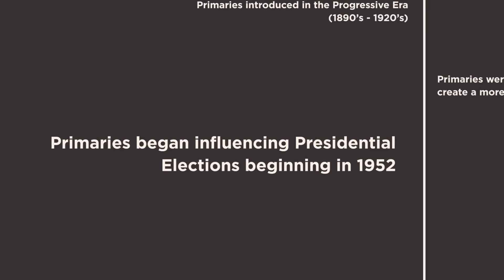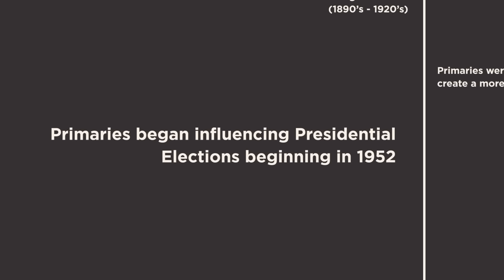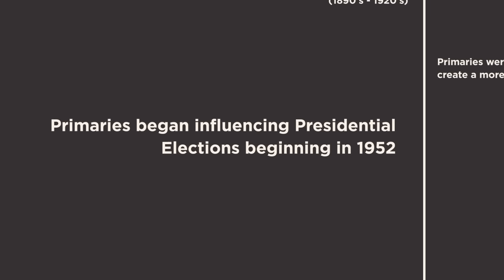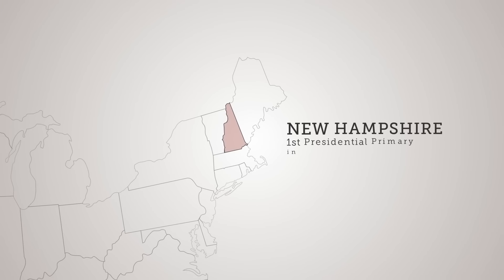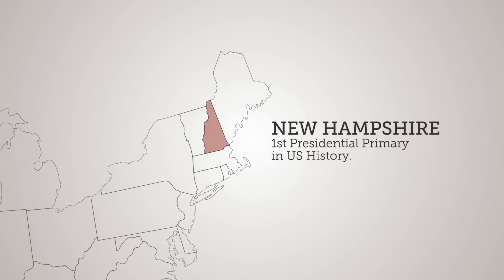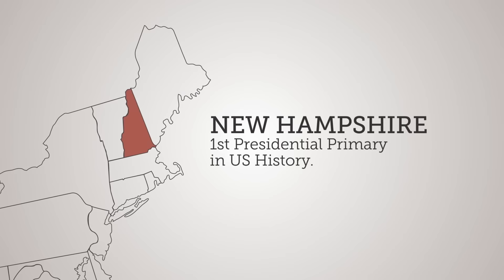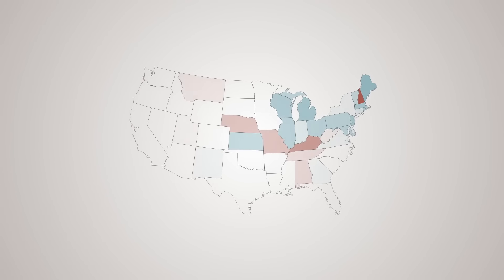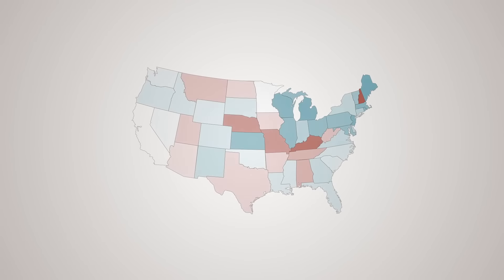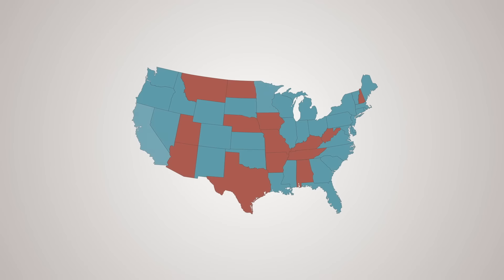In presidential elections, party primary elections became important starting in 1952, when the first-in-the-nation New Hampshire primary helped give Dwight D. Eisenhower the Republican nomination. But over the past 50 years, the two major political parties have passed laws in every state designed to restrict the right to vote for anyone who doesn't join their party.